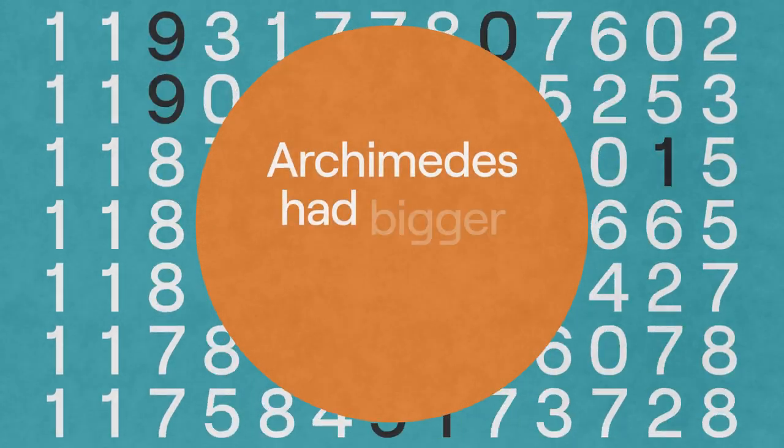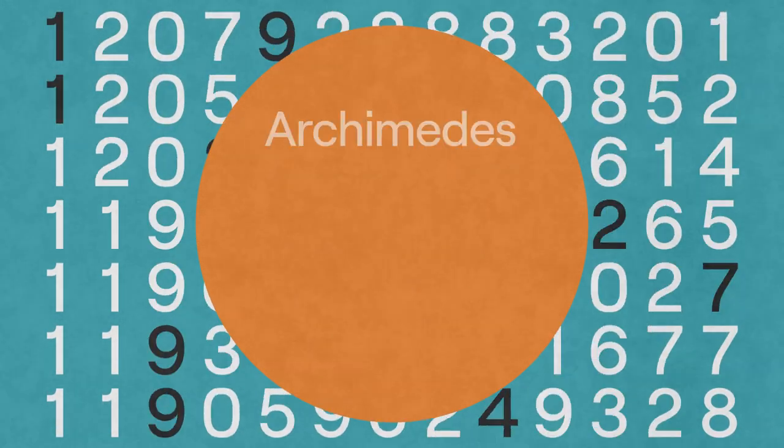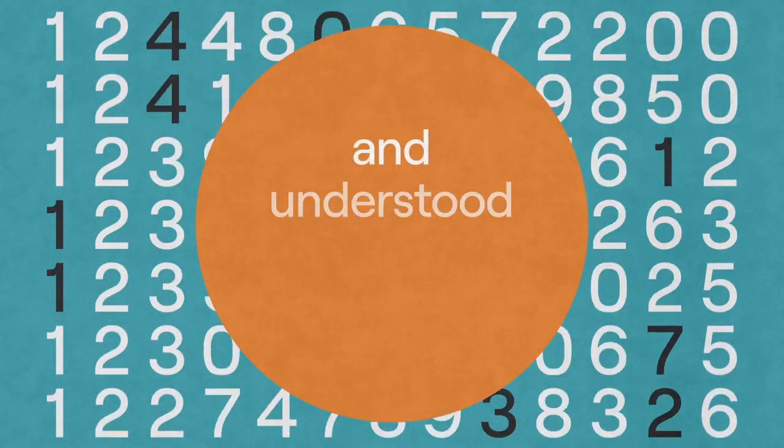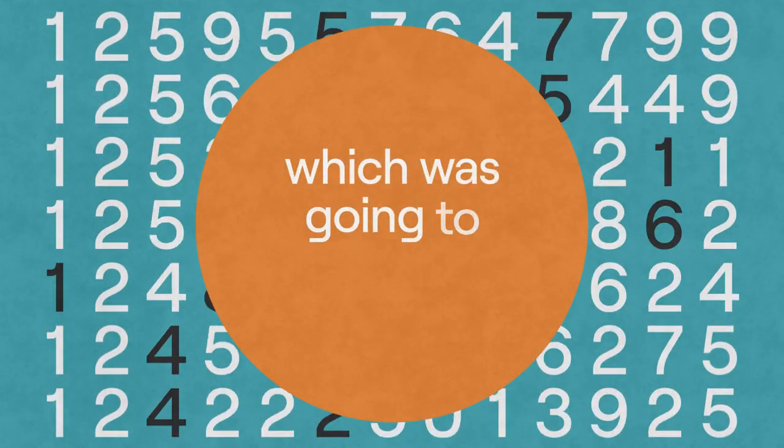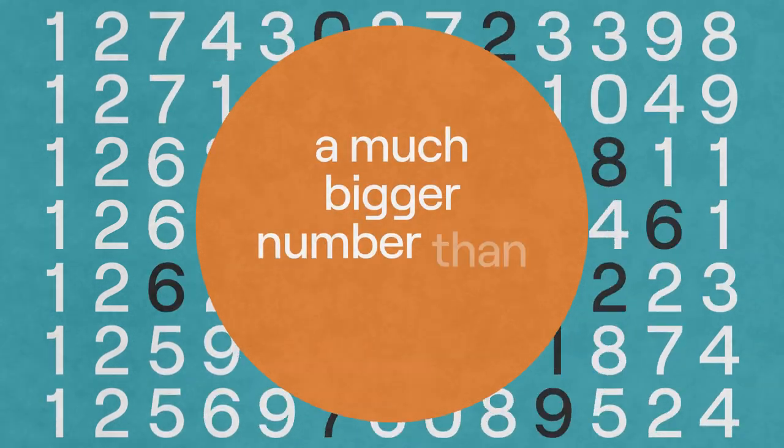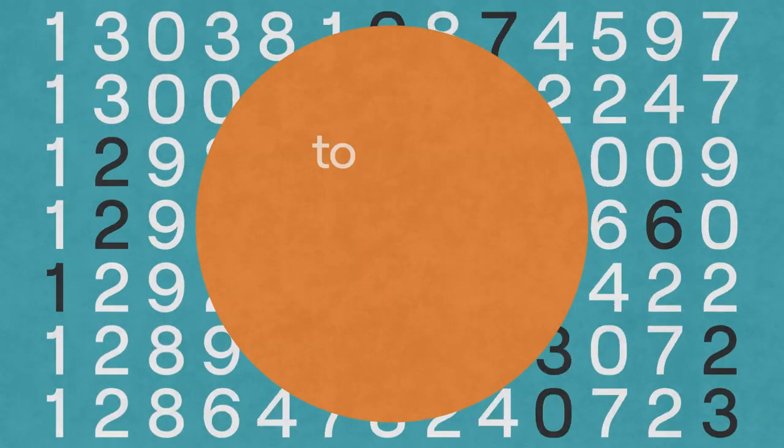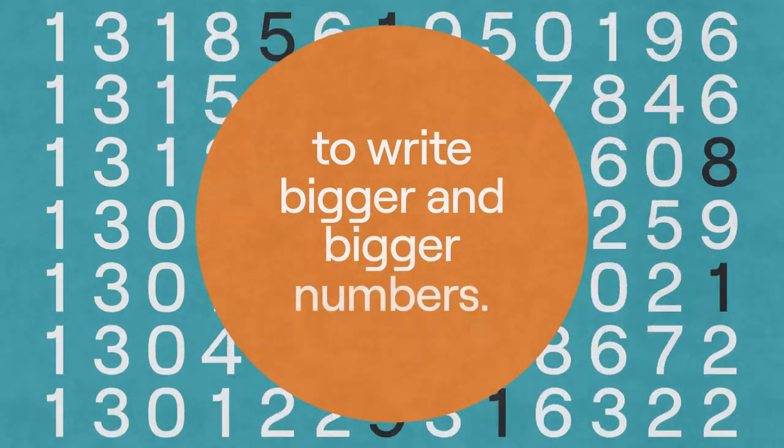Archimedes had bigger aspirations than that. Archimedes believed that everything could be described and understood using mathematics, which was going to require a much bigger number than 10,000. So he came up with a new system to write bigger and bigger numbers.